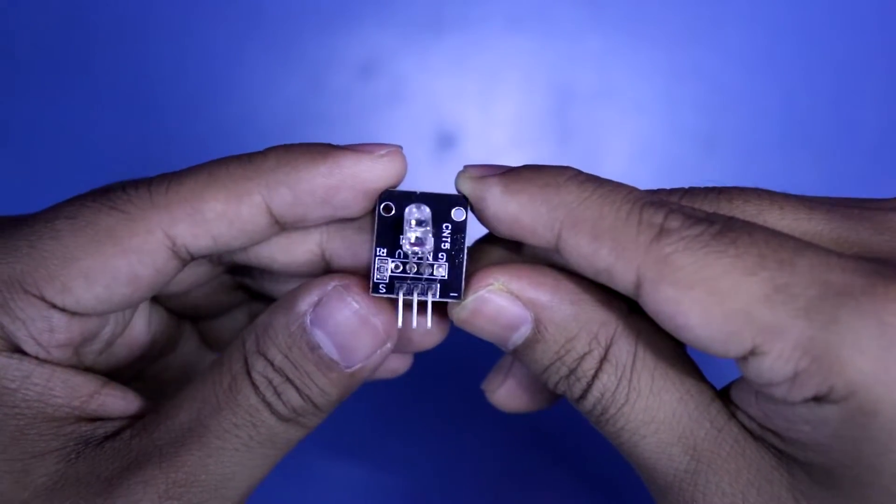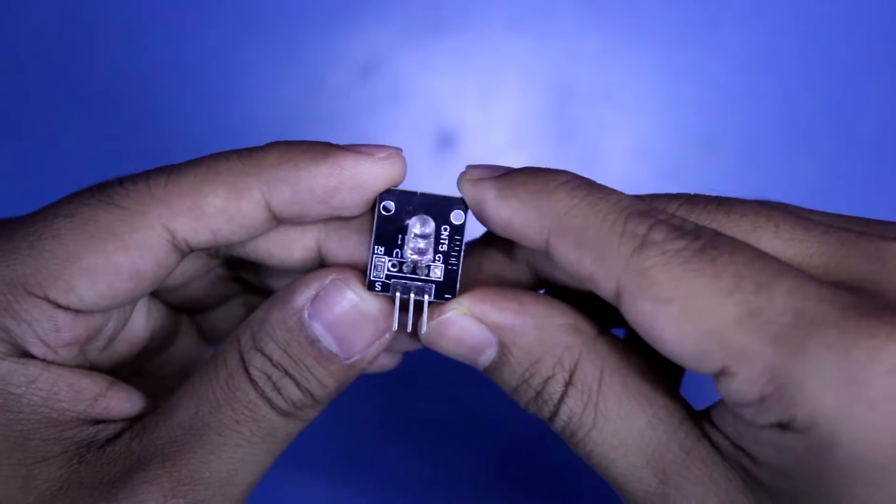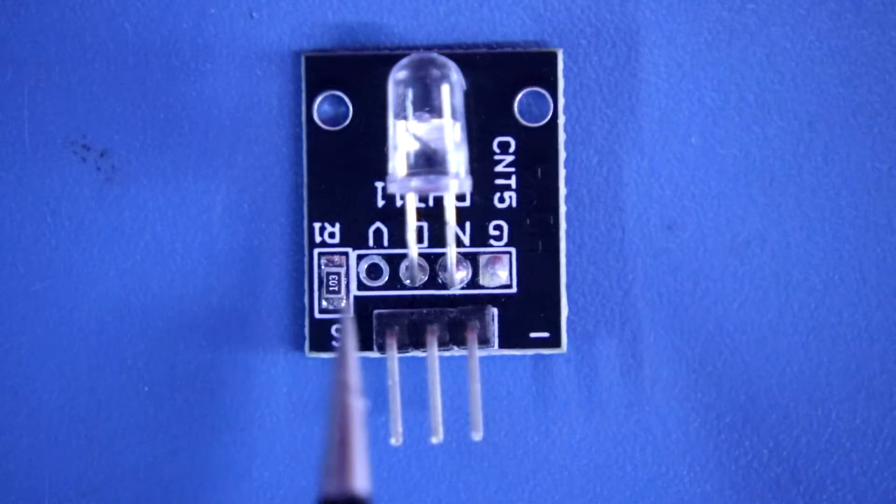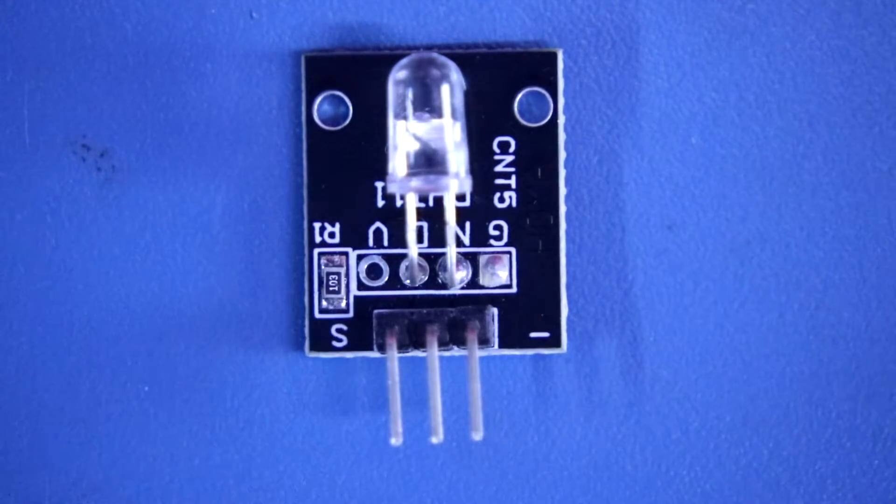Now let's see its pin diagram and connection. On this board there is a 10 kilo ohms resistor and the automatic LED. Now let's see how all these things are connected together.